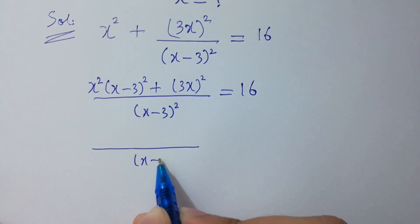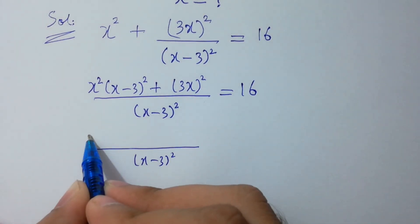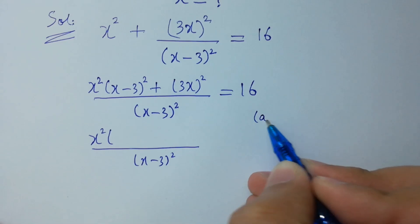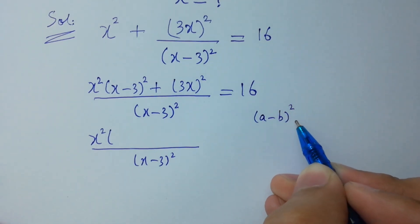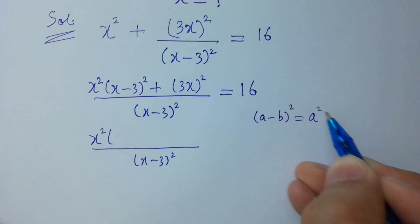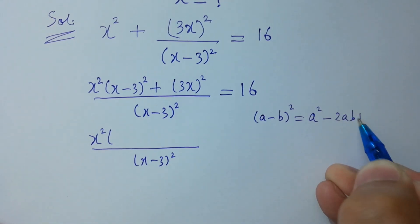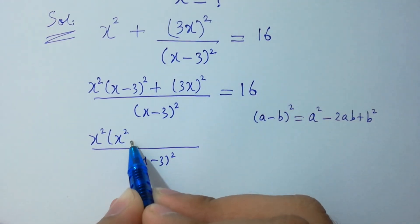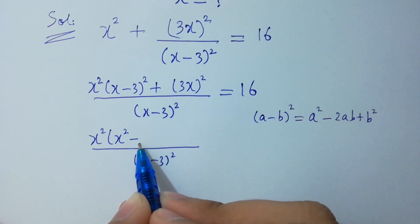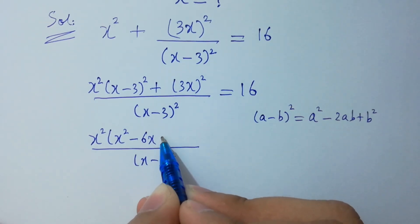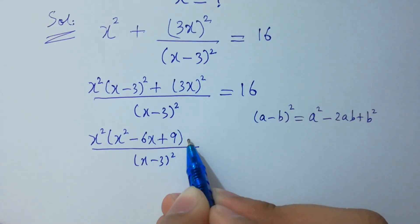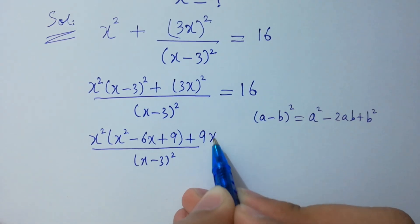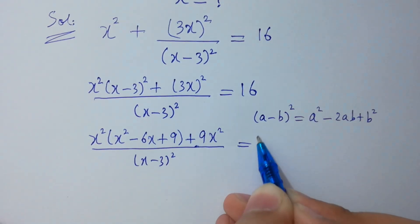Now expand using (x-3)²: recall that (a-b)² equals a² minus 2ab plus b². So here x² minus 6x plus 9, plus 3x² giving 9x², equals 16.